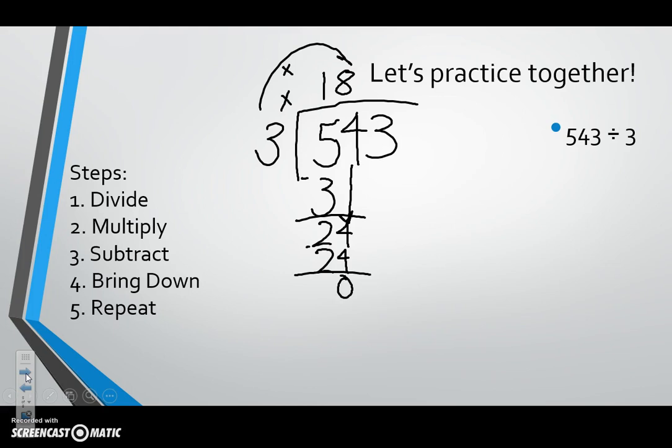Even though we have a zero, we can't forget about this number up here. We just have to bring it down and repeat our steps. How many times can three go into three? Once. We multiply those numbers. Three times one is three. We subtract them, we get zero. I have nothing left to bring down, so we are left with our quotient of 181.